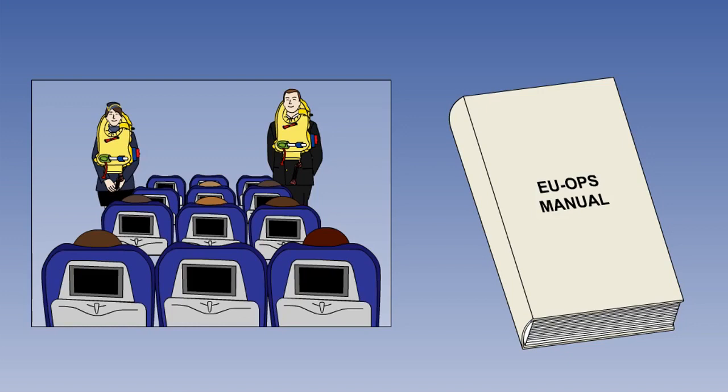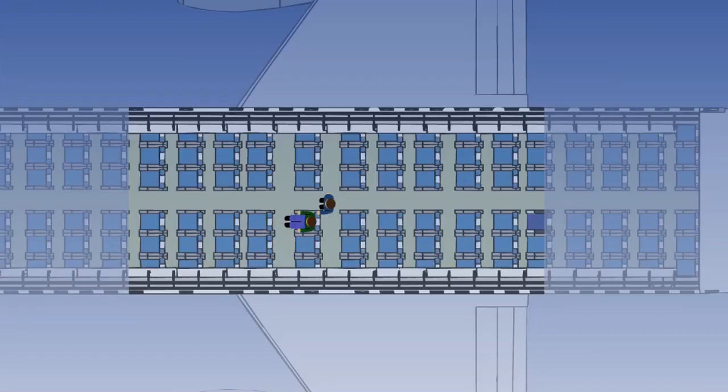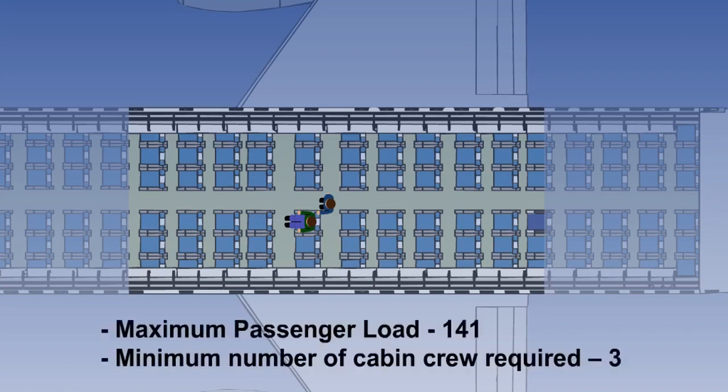There are some requirements in EU Ops regarding the number and composition for cabin crew on an aeroplane. An aeroplane with a maximum approved seating of more than 19 with at least one passenger on board must have one cabin crew, and for every 50 or fraction of 50 passenger seats on the same deck, one cabin crew member is required.